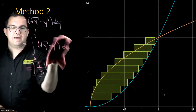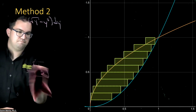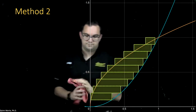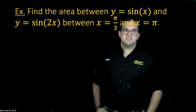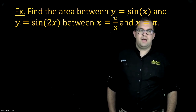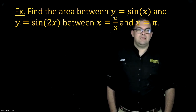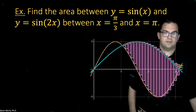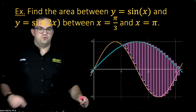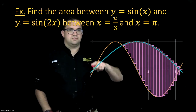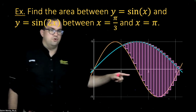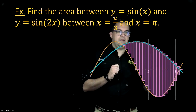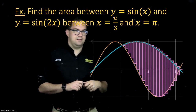Let's look at another example. Find the area between y equals sine of x and y equals sine of 2x between x equals pi over 3 and x equals pi. Looking at this region, there's some area trapped here and some over here, but we're asked to find it between pi over 3 and pi — specifically this area shaded in pink.